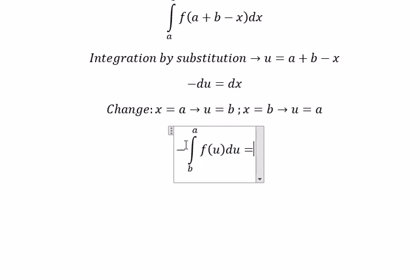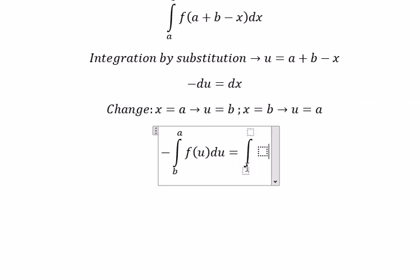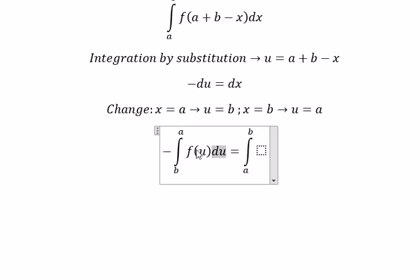Because we have the negative, we can swap the top and bottom limits. This gives us a at the bottom and b at the top, and we keep the integrand the same.